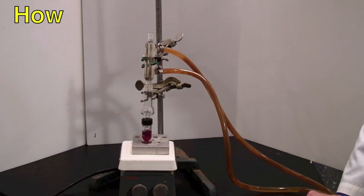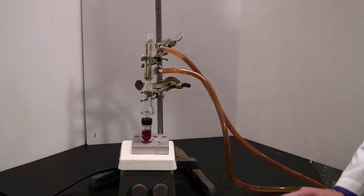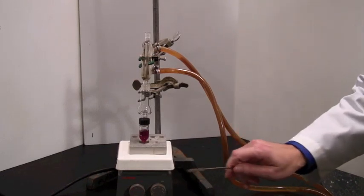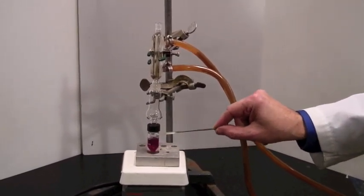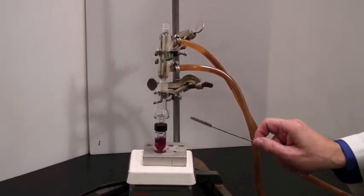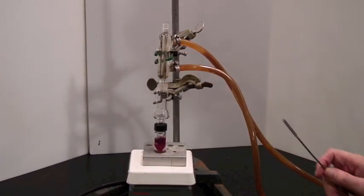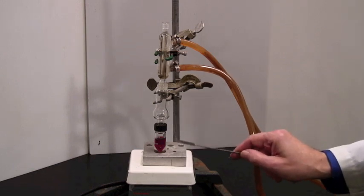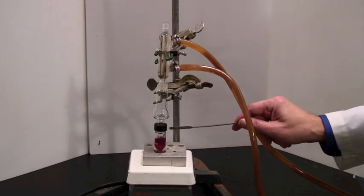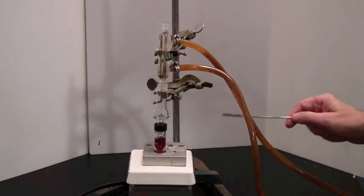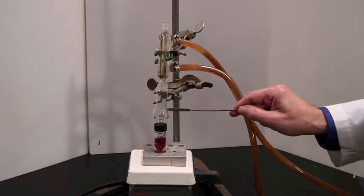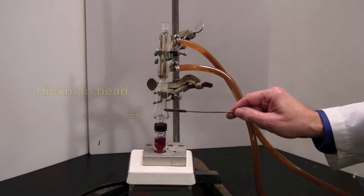Here is a microscale distillation setup ready to go. We have here, obviously, the hot plate at the bottom, and a heating block. This is a conical vial. There's a spin vane in there. Sometimes you may have a round bottom vessel here, depending on whether you've got more liquid or not. It's held in place with a threaded cap.